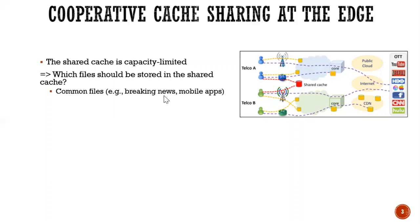First, it should be a common file. For example, breaking news or mobile apps. And second, these files should be popular. It means that the file is usually accessed or queried by users like weather information or Google Maps.